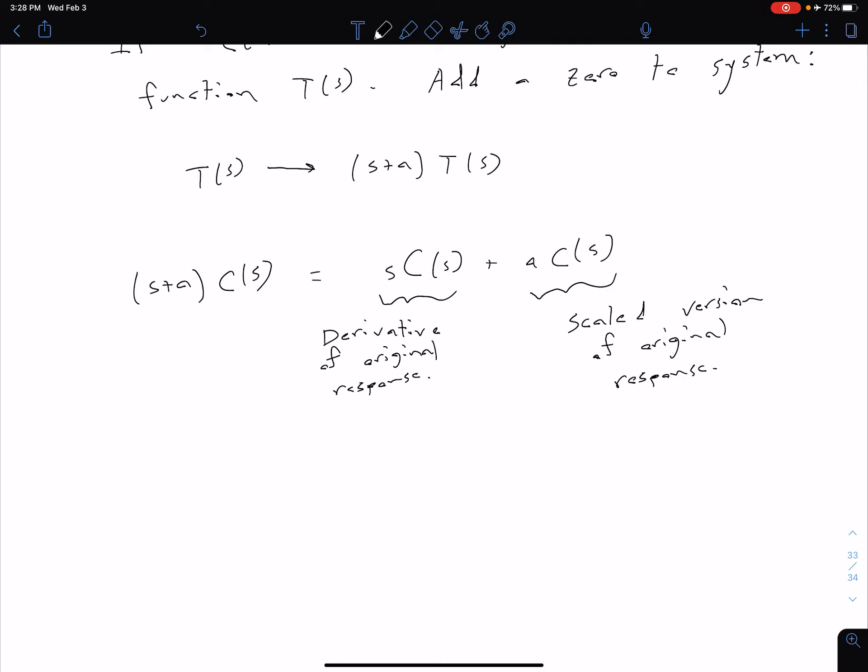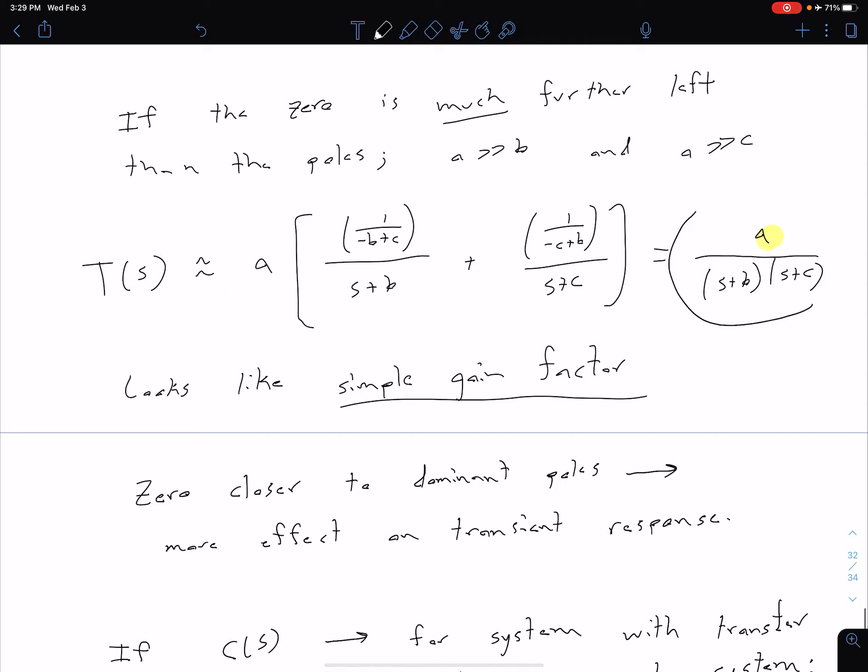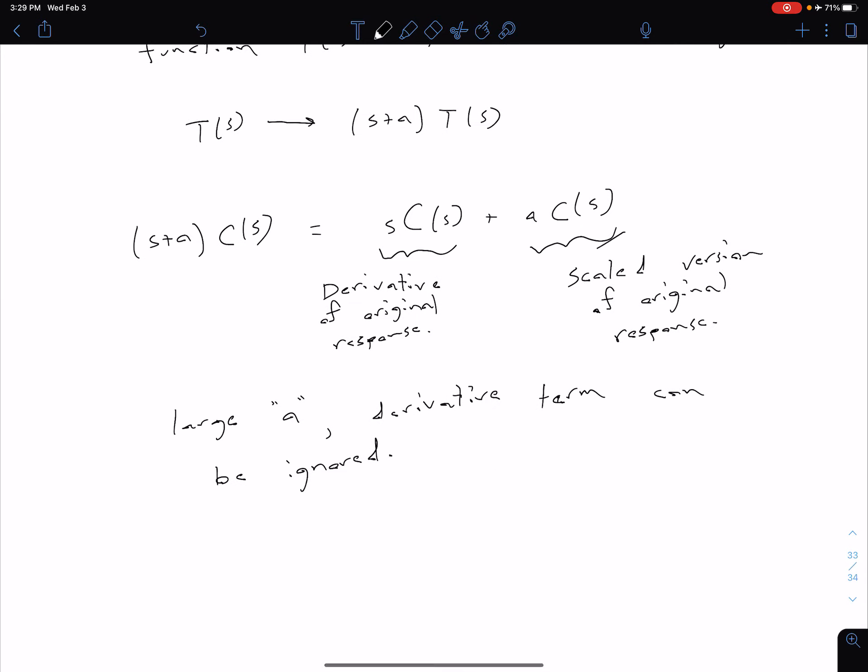And so what we can see is that as A becomes large, so for large A value, our derivative term becomes negligible. So derivative term can be ignored. And so that's the same thing that we saw before, just we came at it from a different way. So we said that if that zero is far enough left, we just have our original transfer function multiplied by some A. And so that's the same thing we're saying here. We're saying if this A is large enough, this term dominates, and we can essentially ignore this component. However, as that A is smaller, which corresponds to the zero being closer to our dominant poles, then we need to consider that derivative term.